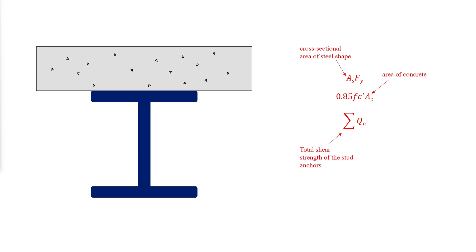And sum of Qn is the total shear strength of the stud anchors. Each possibility represents a horizontal shear force at the interface between the steel and the concrete.